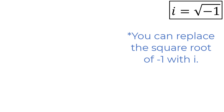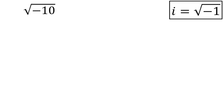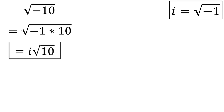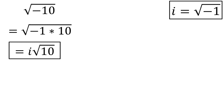Let's look at an example. Say you have the square root of negative 10. This could be rewritten as the square root of negative 1 times 10. We just stated that the square root of negative 1 is i, which we can pull out of the square root. So this can be simplified as i times the square root of 10.